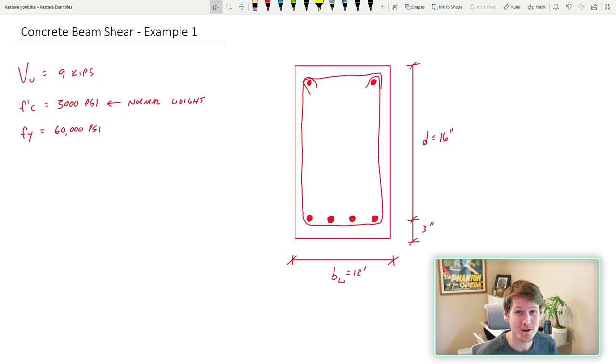What's up everybody? Welcome back to the auditorium. Today I have a concrete beam shear design example for all of you. We are given a shear demand of nine kips and we're given some properties here f'c and fy. This is just normal weight concrete 3,000 psi and the yield strength of the rebar is 60,000 psi.